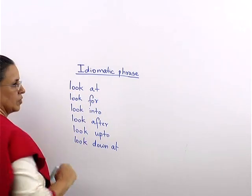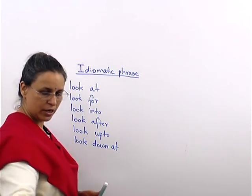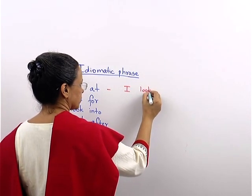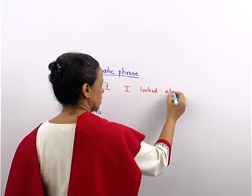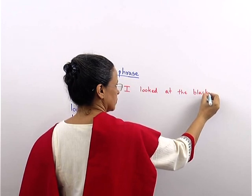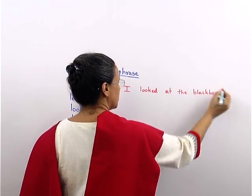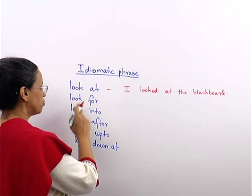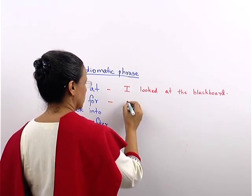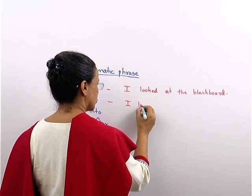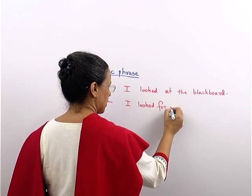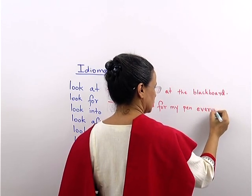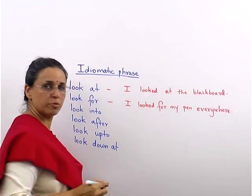'Look at' means to look towards something. For example: I looked at the blackboard. 'Look for' means to search — dhundna, khojna. For example: I looked for my pen everywhere — meaning I was searching for my pen everywhere.